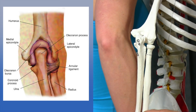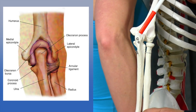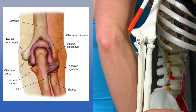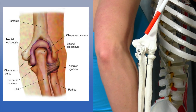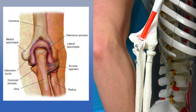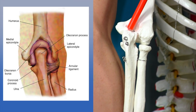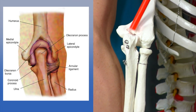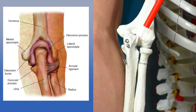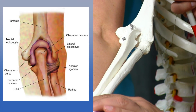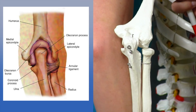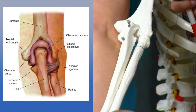Looking at the posterior region of the elbow, we can identify the olecranon process, the medial epicondyle of the humerus, the lateral epicondyle, and the olecranon fossa. The olecranon articulates with the trochlea of the humerus and the radius articulates with the capitulum. During elbow movement, you can see how the olecranon slides right into the olecranon fossa, much like a hinge.